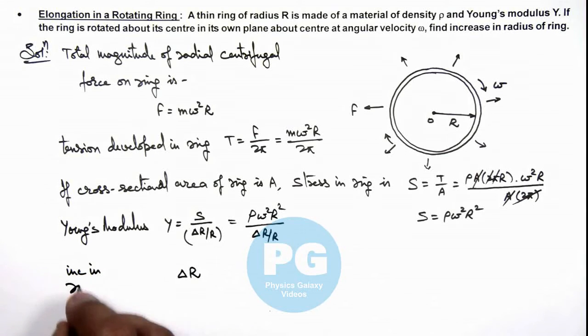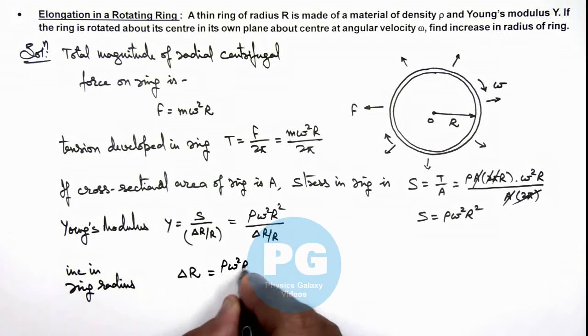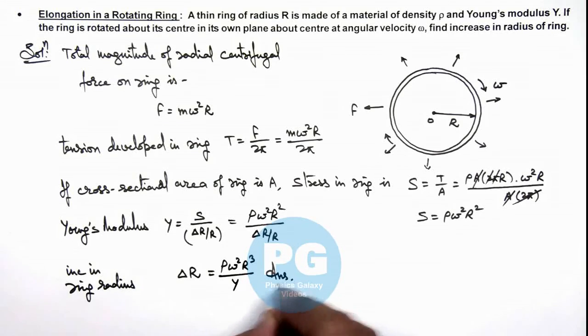Increase in ring radius can be given as ρ ω² R³ divided by the Young's modulus. That is the result of this problem.